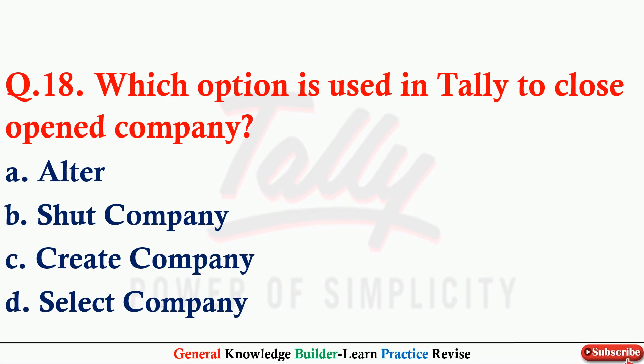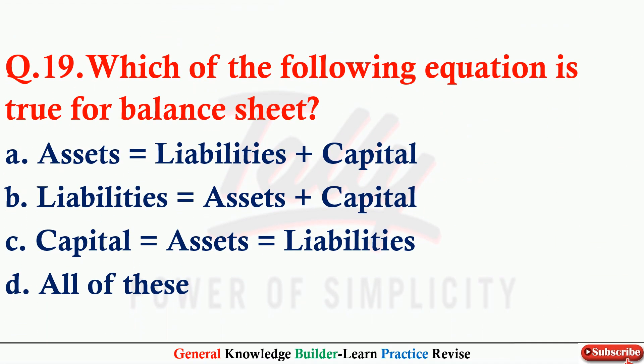Q18: Which option is used in Tally to close an open company? Option B: Shut Company. Q19: Which of the following equations is true for a balance sheet? Option A: Assets = Liabilities + Capital.